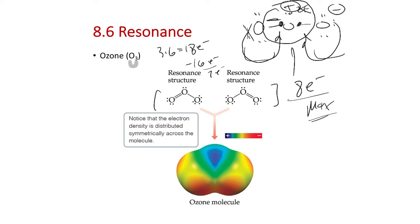When we see those expanded octet structures, it's going to be for third row and bigger atoms. Like OF6 doesn't exist as a compound - having oxygen as a central atom with six fluorines, those electrons are too close together. You need a bigger central atom to fit those six bonds around that bigger sulfur atom. Now back on ozone, we have one Lewis structure that has a lone pair, double bond, and single bond between the O's.